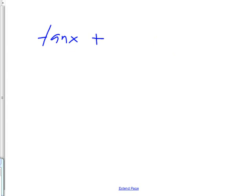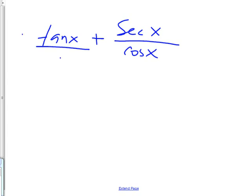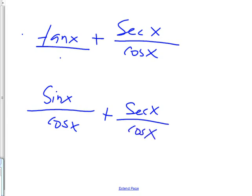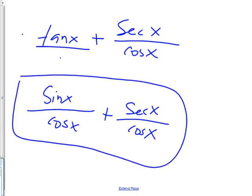Next thing — you have to be able to handle common denominators. Can you add these together right now? You can't add them together because they don't have a common denominator. But you could multiply this side by cosine over cosine, or there's a smarter way: tangent equals sine over cosine. So you can just change this into sine over cosine, and then the other one already has a cosine, so they now have a common denominator. Now I can add them, and their answer will have a cosine x on the bottom.